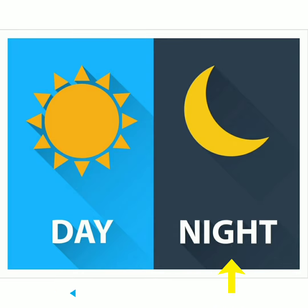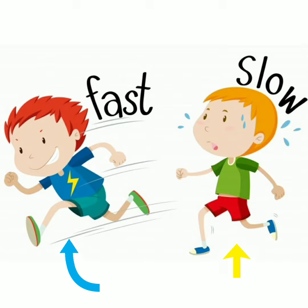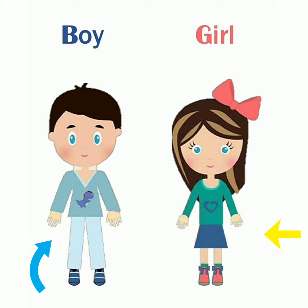Next is fast, slow. Fast yani tezy se, slow yani dheere se. Next, boy, girl — lada ka, lada ki.